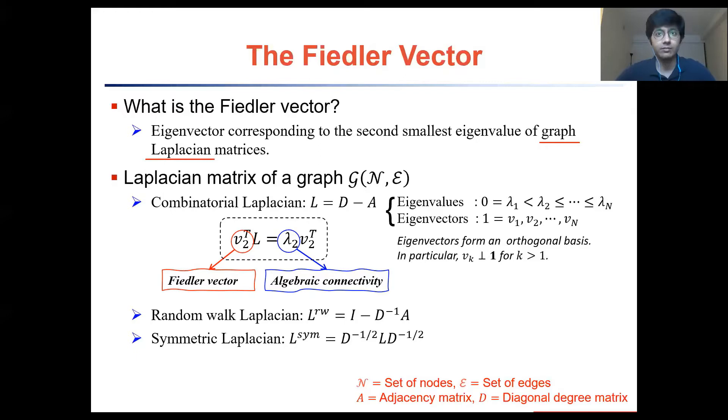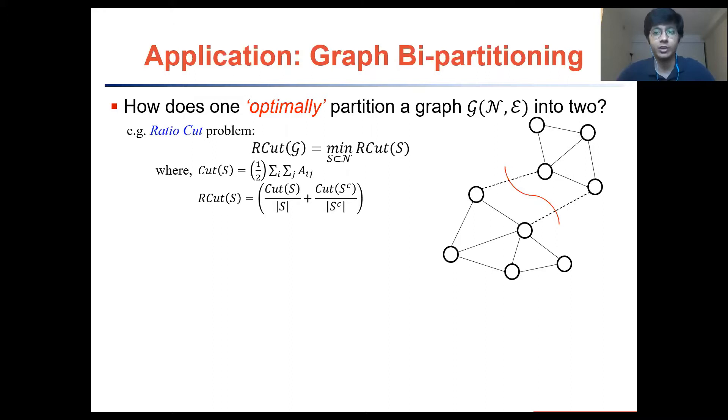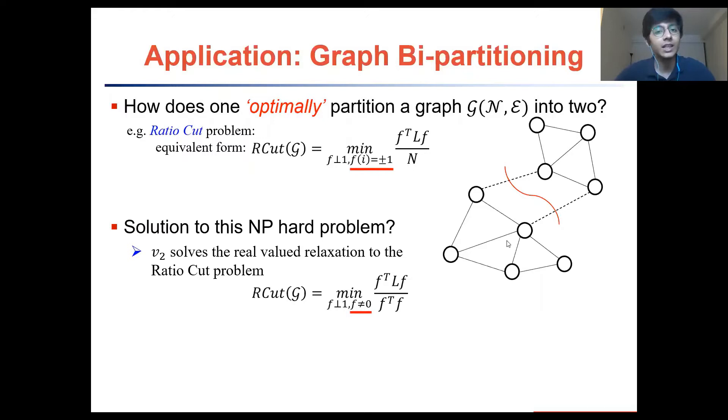Let me now summarize the practical importance of this eigenvector. Consider the problem of partitioning a graph into two subgraphs in an optimal manner. There are various interpretations of the word optimal, one of them leading to the ratio cut problem. This problem involves minimizing the ratio cut objective function over every possible subgraph of this graph and is therefore an NP-hard integer problem. An equivalent form of this integer problem has a real-valued relaxation which is solved by the Fiedler vector v2.